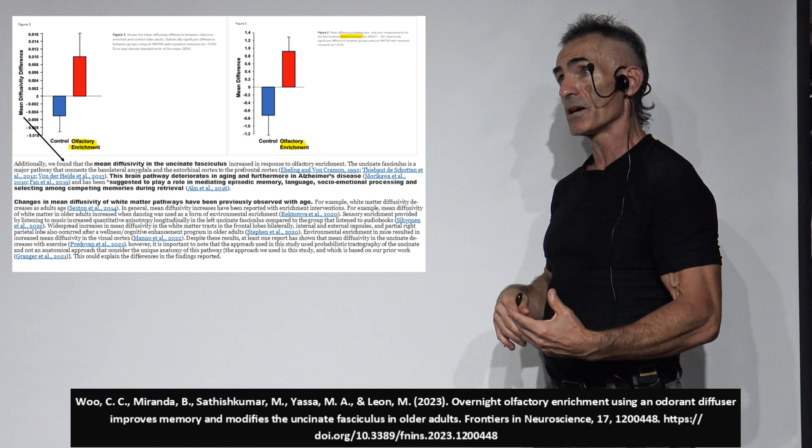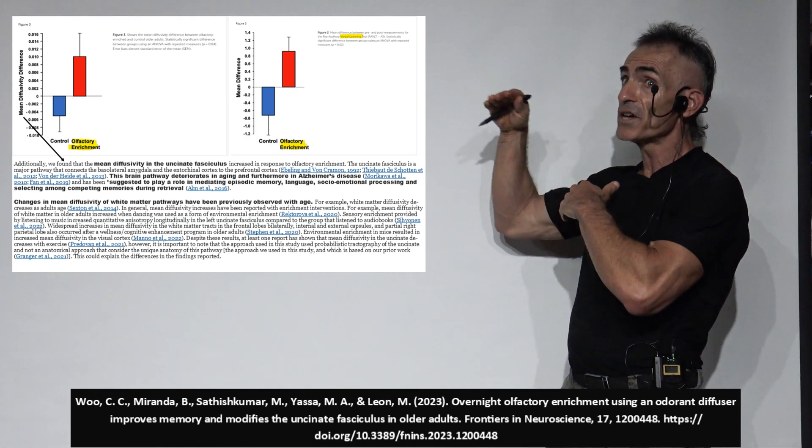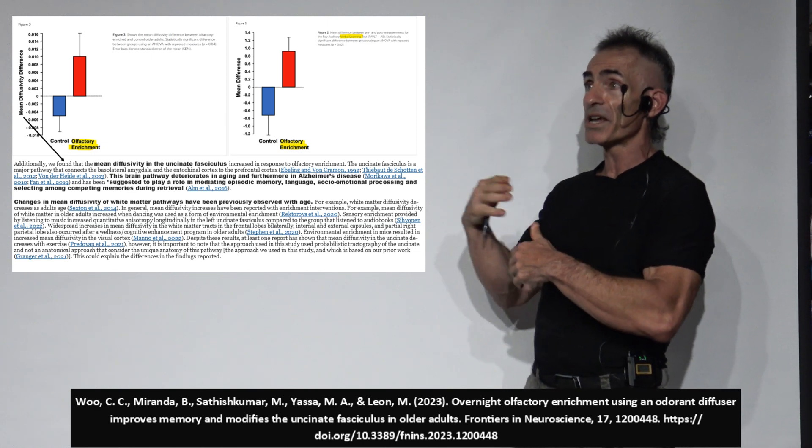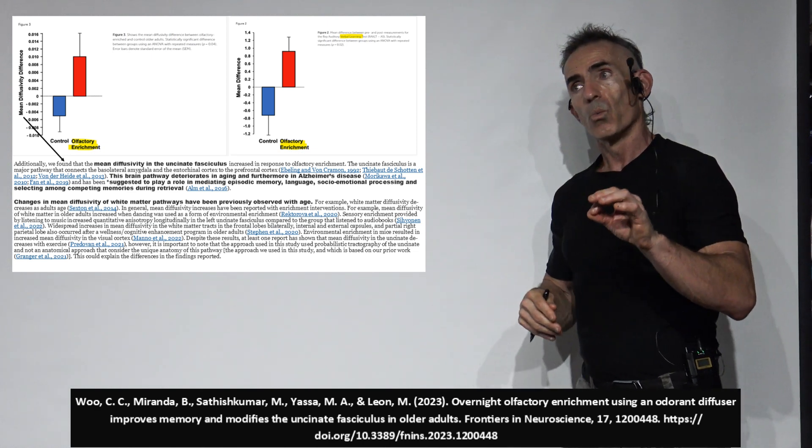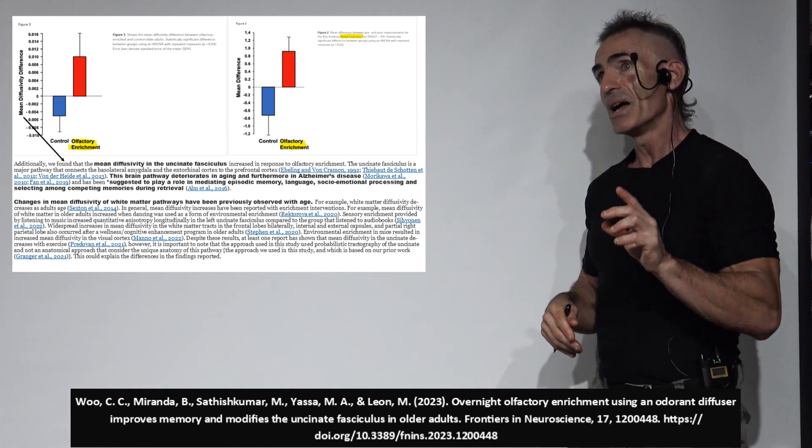You're looking at your verbal scores and diffusivity, which represents the uncinate fasciculus, which I'll elucidate you to in a few seconds.